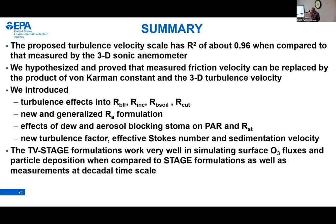In summary: we have proposed a turbulence velocity scale with R-squared of 0.96 compared to sonic anemometer data — the best statistic I've ever seen in my career. We hypothesized and proved that the measured friction velocity can be replaced by one common constant times the turbulence velocity scale K times E*. We have introduced turbulence effects in the boundary layer, leaf, in-canopy, soil, and cuticle, with a new cuticle formulation. Effects of PM and dew are also included, and they all worked out very well.